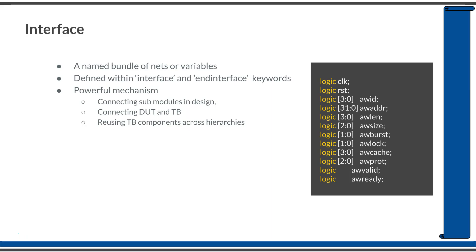An interface is used to name a bundle of nets or wires together. You can imagine an interface as something similar to a physical interface which will have different sub-signals or sub-ports in it. So if you wanted to bundle all the signals together and access them together, you can use System Verilog Interfaces. Imagine you have a DUT which is dealing with the AXI protocol.